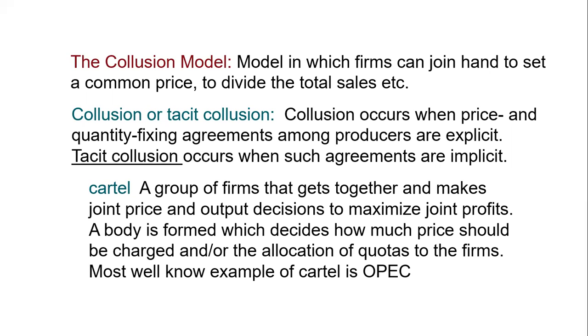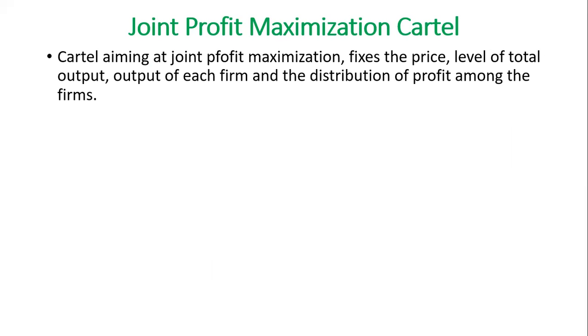Cartels could be of a number of types, for example joint profit maximization cartels or cartels that allocate quotas between firms. However, we shall discuss only one such type, which is joint profit maximization cartels. These cartels aim at maximizing the overall or joint profit of the firms. They fix the price and output level, fix the output of each firm, and distribute the profit among the firms according to an agreed-upon formula.